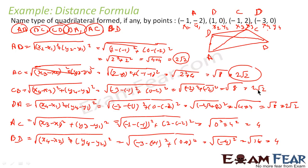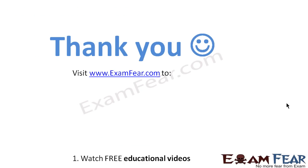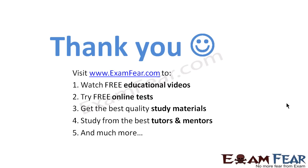If you observe here, all the 4 sides are equal — that is 2 root 2 — and the diagonals are also equal. Since all sides are equal and diagonals are also equal, we can say this is a square. So what we have done: we found all 4 sides, we found the diagonals, and observed that all 4 sides are equal and diagonals are also equal, so it is a square. Thank you. Visit examfear.com to watch free educational videos, try free online tests, get the best quality study materials, and study from the best tutors and mentors.